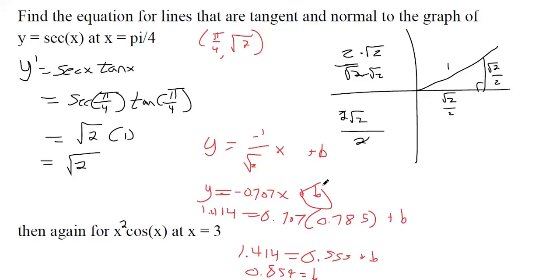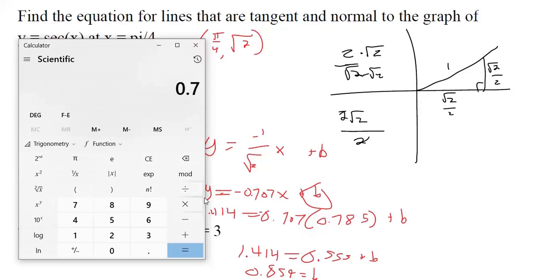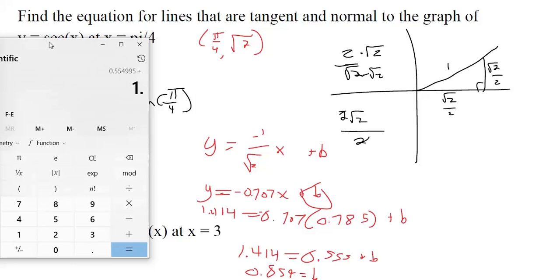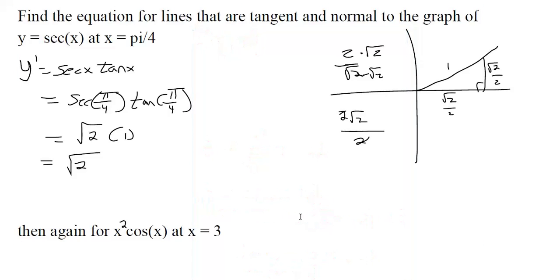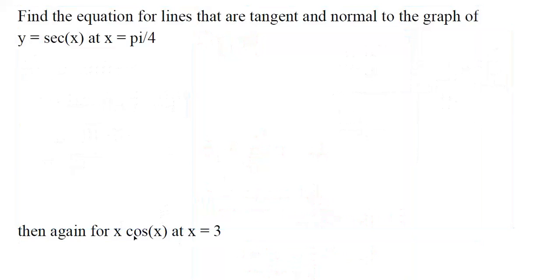The book says I did something wrong — I dropped a negative sign, so I should be adding that to both sides. Adding 0.555 to 1.414 gives a y-intercept of approximately 1.97. So the equation of the normal line — the perpendicular line — has that corrected y-intercept. We'll do that again with the next example using a different equation.